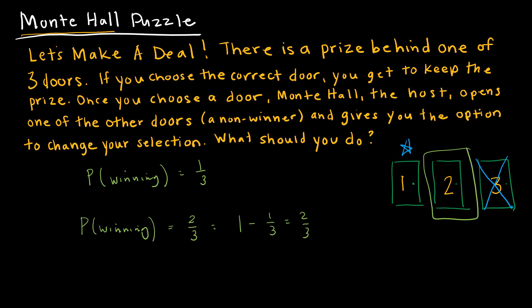To summarize: my probability of winning the first time was one-third. The second time, I win if my initial pick was wrong. Since my initial pick was right with probability one-third, it was wrong with probability two-thirds. That's my probability of winning now, because the host has already eliminated a losing door for me.